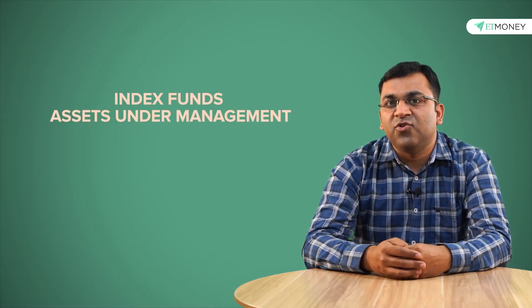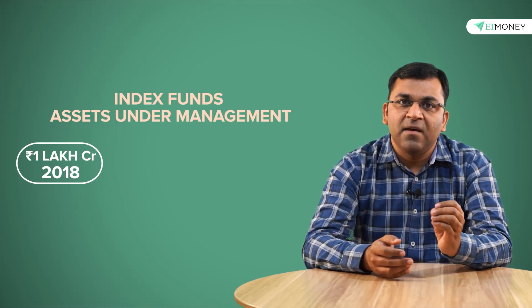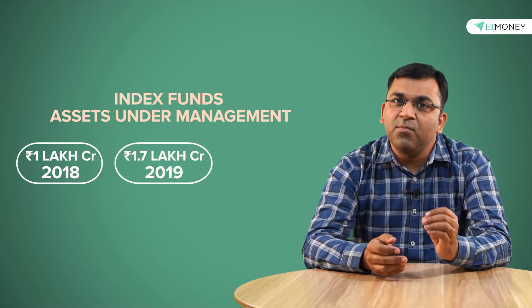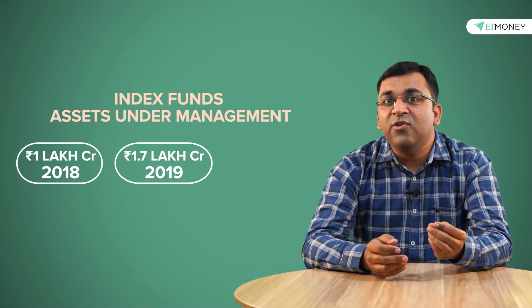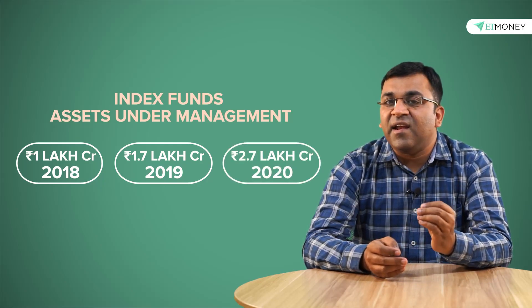To put it in numbers, the total AUM of index and ETF funds stood at 1 lakh crores in December 2018. Then by December 2019, this number had jumped to 1.7 lakh crores and most recently in December of 2020, this AUM is at 2.7 lakh crores.